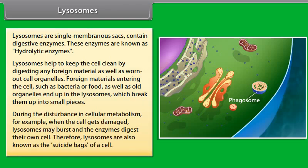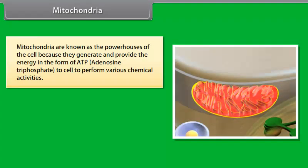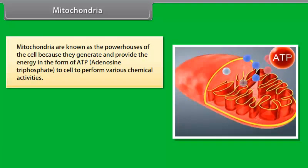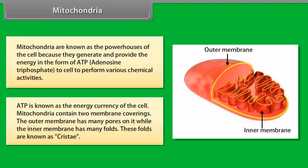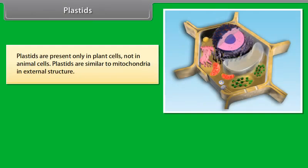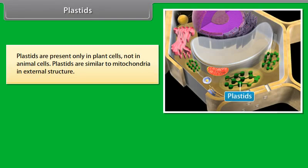Lysosomes are single membrane sacs that contain digestive enzymes, known as hydrolytic enzymes. Lysosomes help to keep the cell clean by digesting any foreign material as well as worn-out cell organelles. Foreign materials entering the cell — such as bacteria or food — as well as old organelles end up in the lysosomes, which break them up into small pieces. During a disturbance in cellular metabolism, for example when the cell gets damaged, lysosomes may burst and the enzymes digest their own cell. Therefore, lysosomes are also known as the suicide bags of a cell.